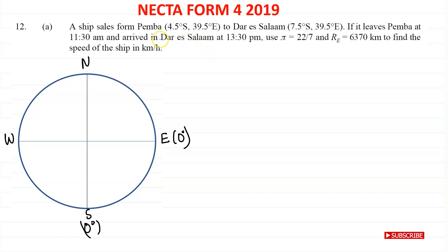A ship sails from Pemba with this location 4.5 degrees south 39.5 degrees east to Dar es Salaam 7.5 degrees south 39.5 degrees east. If it leaves Pemba at 11:30 am and arrives in Dar es Salaam 1:30 pm, use pi equal to this, radius of the Earth equals to this. Find the speed of the ship in kilometers per hour. So we are after speed.